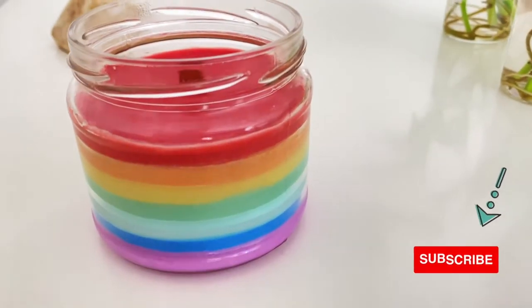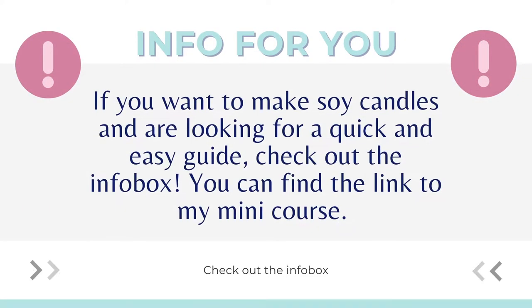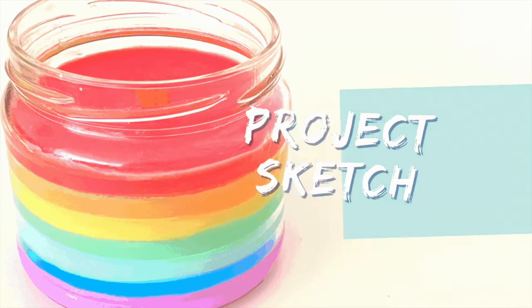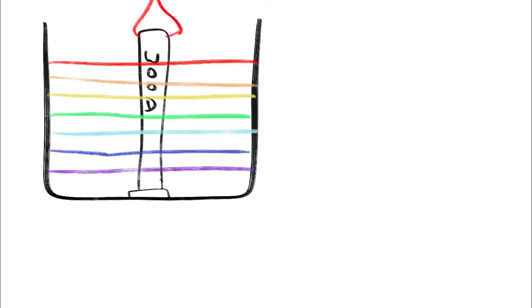So, let's get started! First, let's make a sketch of the candle to get an idea of how to make it. The idea is to use a glass container, a wooden wick and pour layers of different colors.